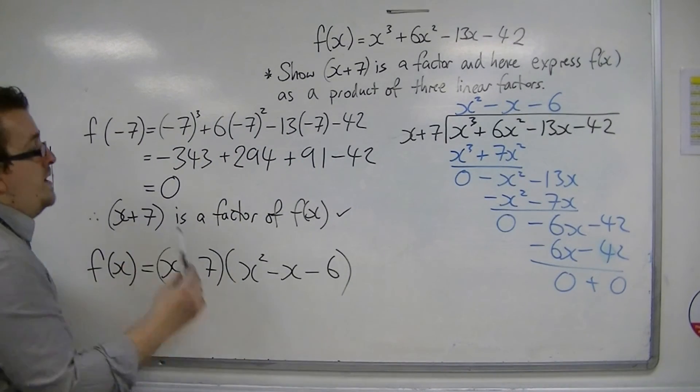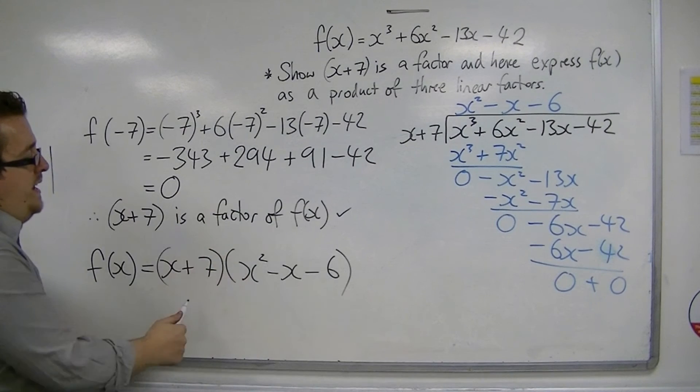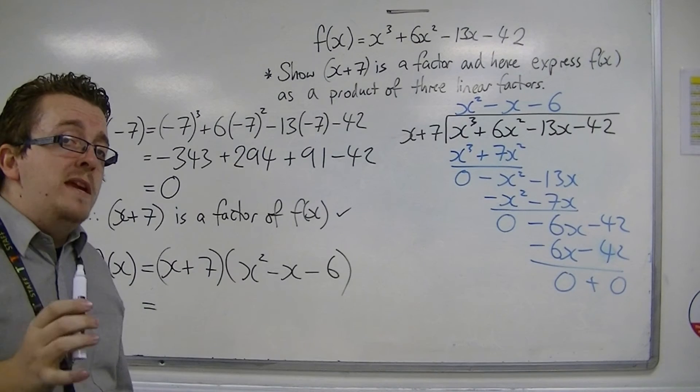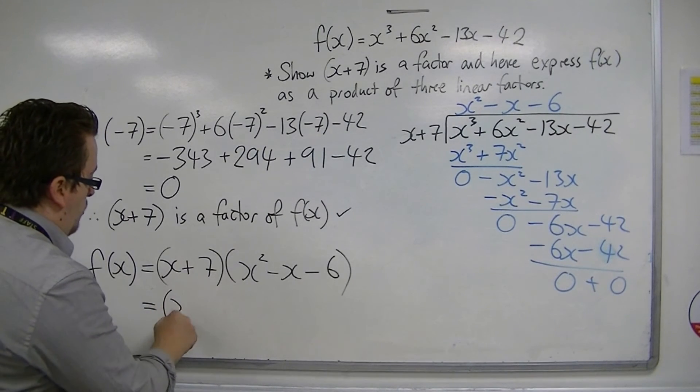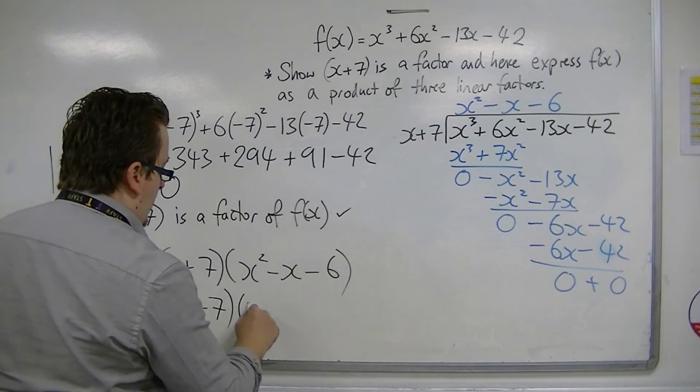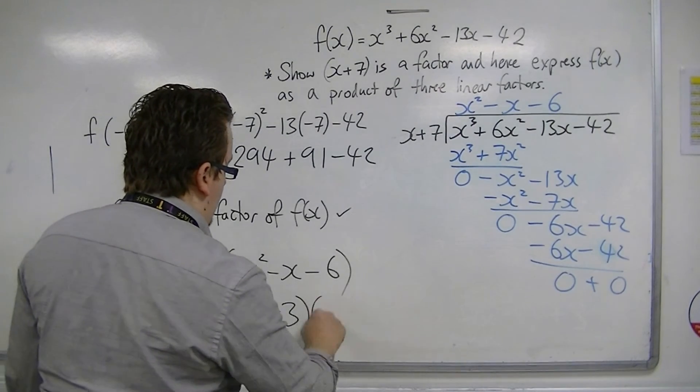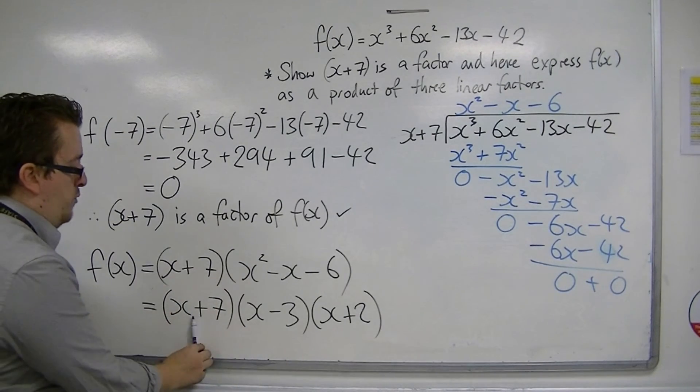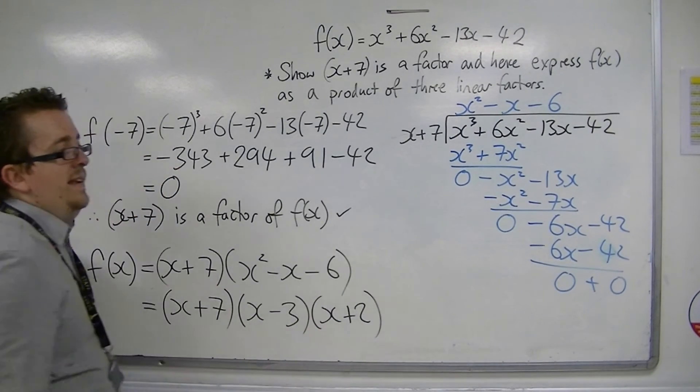So you've now written it as a product of a linear term and a quadratic term. But we want it as three linear terms. So we must factorise the quadratic to get x minus 3 times x plus 2. And there we are, we've written it as the product of three linear terms.